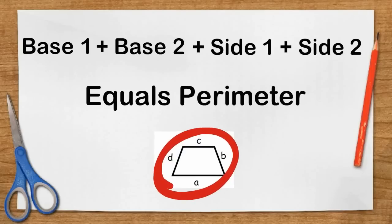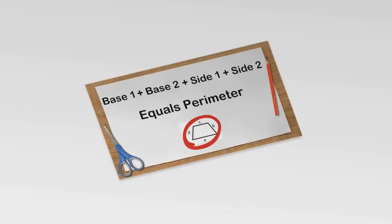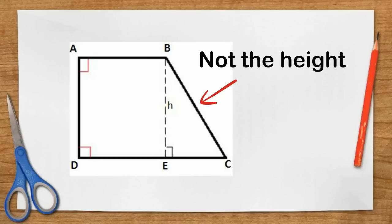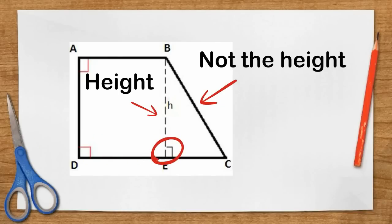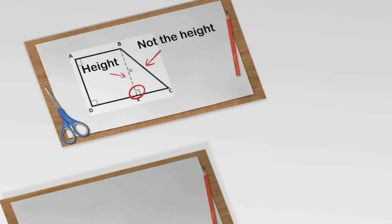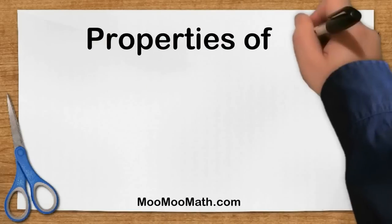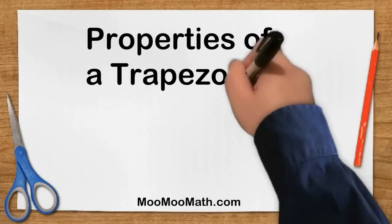A common mistake is that people confuse the side length of a trapezoid for the height — it is not the height. Think of the height as a line that runs perpendicular from one base to the other. Anyway, there are some properties for the trapezoid — hope these help.